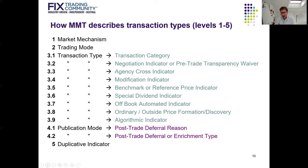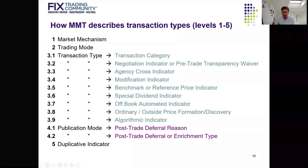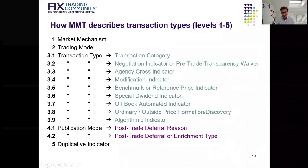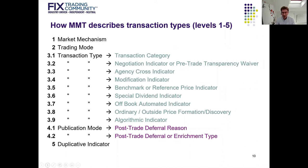This normalised representation benefits everyone, including market operators, trade reporting service providers, the market data vendors and trade aggregators, the consumers of the post-trade data, and the financial market data regulators. MMT has been designed to gradually describe all the relevant facets of the trade within levels, beginning with the fundamental market mechanism at level one — for example, a dark book matching mechanism. MMT then describes additional facets such as the trading mode, and also accommodates additional important attributes including those mandated by the regulatory technical standards RTS1 for equities and RTS2 for non-equity instruments.